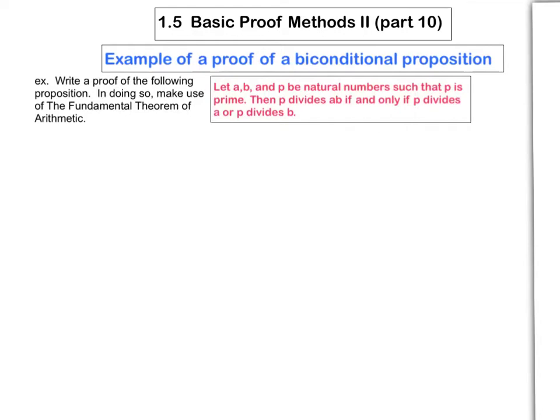This is a biconditional statement because of the 'if and only if.' So you're really claiming two things: first, that if p divides ab, then p divides a or p divides b. And conversely, that if p divides a or p divides b, then p divides ab. You have to prove both of those, and the proofs of those will each appear in separate paragraphs.